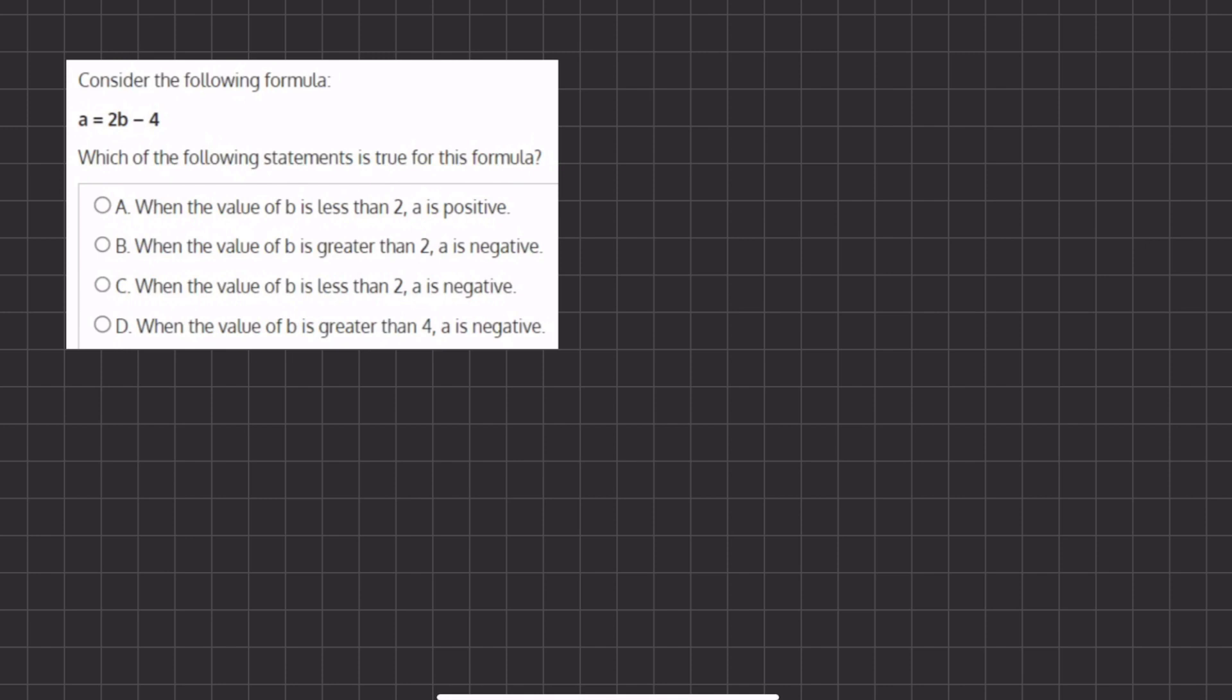Alright, so the first step into plotting our function, we have to find two points on our graph. We are going to use our intercepts, and that is going to be when a equals 0 and when b equals 0. So when we plug in 0 for a, we have 0 equals 2b minus 4, and we can add 4 to both sides, equals 2b, and divide 2 on both sides in order to get b equals 2.